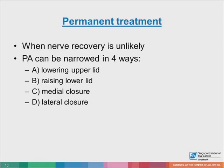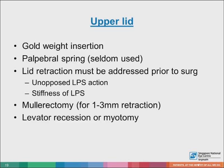Permanent treatment is only done if there is likely no chance of recovery. We can narrow the palpebral aperture in four ways: lowering the upper lid, raising the lower lid, closing the medial side of the eye, or closing the lateral side of the eye. For the upper lid, to lower it, we can consider gold weight insertion. Another option is the palpebral spring, which we seldom use. It is a custom-made stainless steel spring implanted and secured to the superior orbital rim and pretarsal area.